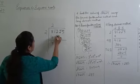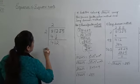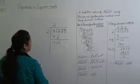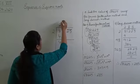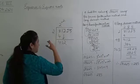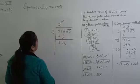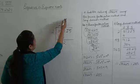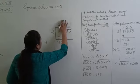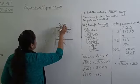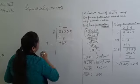Bring the next pair down — so 12 comes down, giving us 412. Now double the quotient: 2 multiplied by 2 gives 4. Whatever digit you place next to this 4, you must place the same digit in the quotient as well.